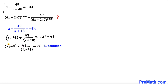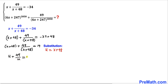Now let's focus on x plus 48 appearing repeatedly and make a substitution to simplify things. Let u equal x plus 48. So our equation becomes u plus 49 divided by u equals 14. Let's remove the fraction by multiplying across by u, giving us u squared plus 49 equals 14u.